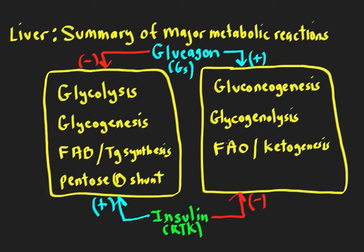Fatty acid oxidation in the liver has one important role: to generate a lot of ATP to run gluconeogenesis. Remember, it takes about six ATP to convert two pyruvate to a glucose molecule, so a lot of ATP is going to come from fatty acid oxidation. At the same time, during the fasting state, all the opposing reactions are turned off — glycolysis, glycogenesis, fatty acid biosynthesis, and the pentose phosphate shunt.